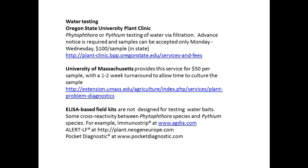A second question: how do you effectively monitor irrigation water to know if your treatment method is working? One method might be to use ELISA field kits for Phytophthora species; otherwise it requires expensive lab testing. The last question was whether I see Phytophthora taxon niederhauserii in nurseries in Oregon and, if so, on what kinds of plants. This species has not shown up here in Oregon — it has been reported from North Carolina and several locations in Europe, but we do not see it in our greenhouses.